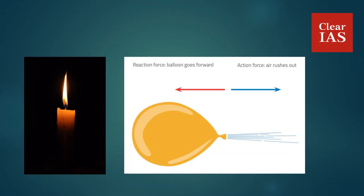So those are the two basic things required for anything to burn: fuel and oxygen. Here, in the case of the candle, the fuel is wax. In our childhood we might have done experiments where we keep a burning candle in a glass box, and after some time the candle goes off because of a lack of oxygen — once oxygen is finished, the candle goes off.